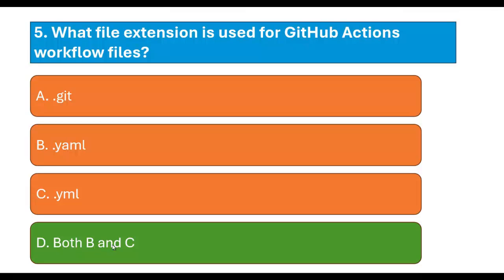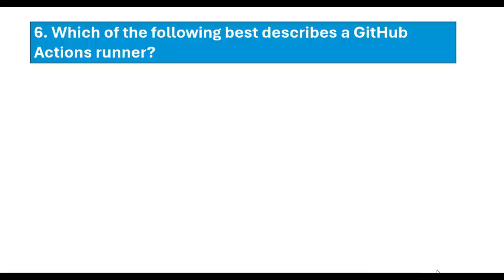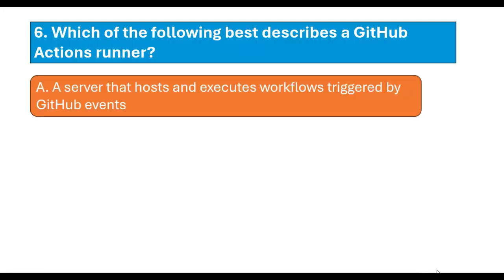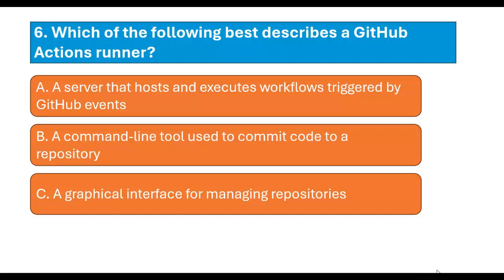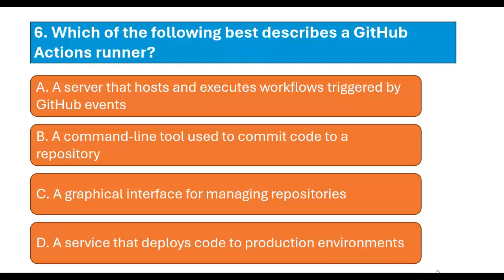Question number 6: Which of the following best describes a GitHub Actions runner? Option A: A server that hosts and executes workflows triggered by GitHub events. Option B: A command line tool used to commit code to a repository. Option C: A graphical interface for managing repositories. Option D: A service that deploys code to production environments. The correct answer is Option A: A server that hosts and executes workflows triggered by GitHub events.